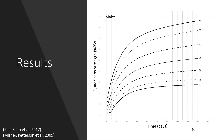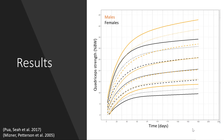Both sexes demonstrated a rapid increase in strength recovery over the first 60 post-operative days, followed by a more gradual increase over the next 120 days. The male, seen in orange on this chart, demonstrated a steeper overall slope and greater strength on average at every post-operative time point. Our observed recovery trajectories were comparable to previous studies which used different analysis techniques and strength assessment methods.